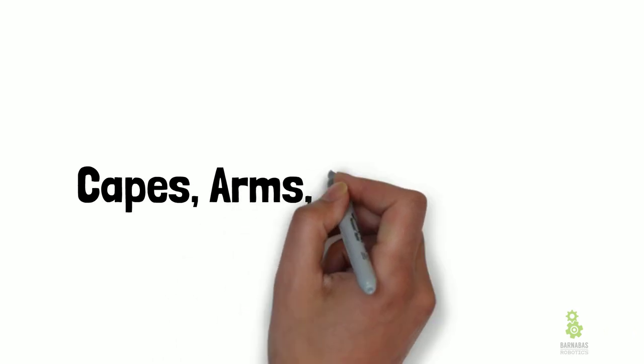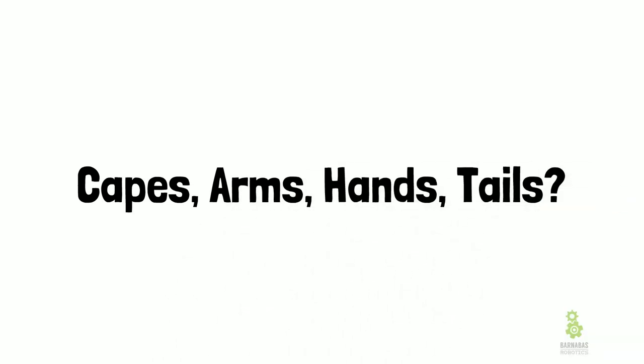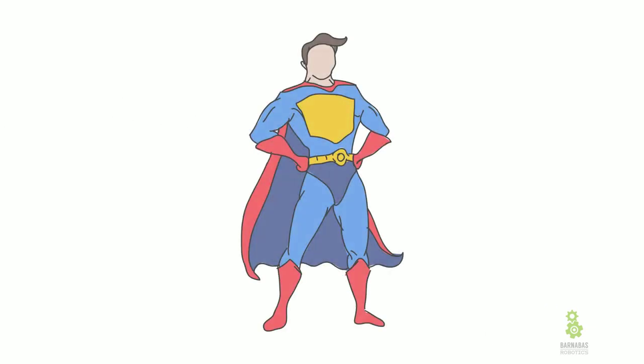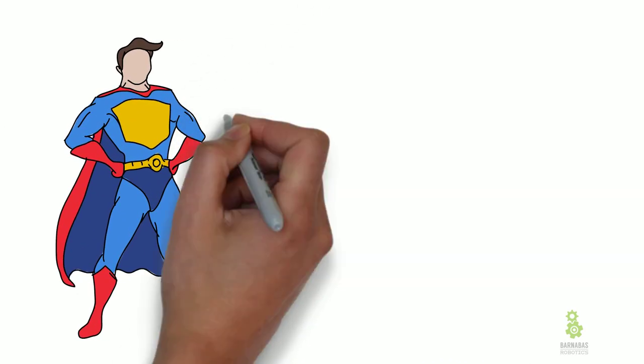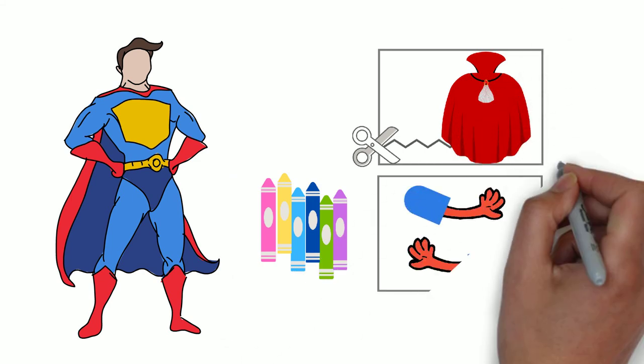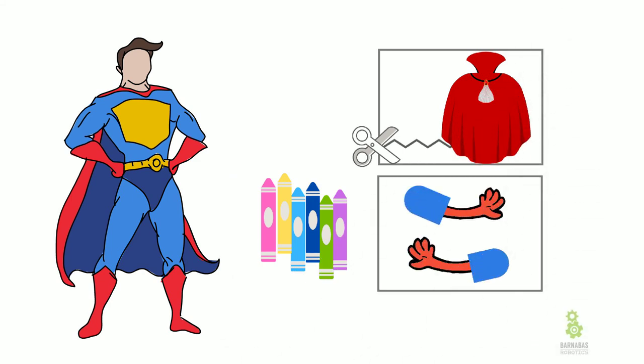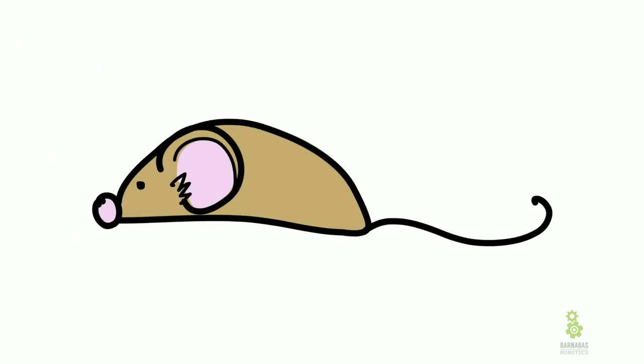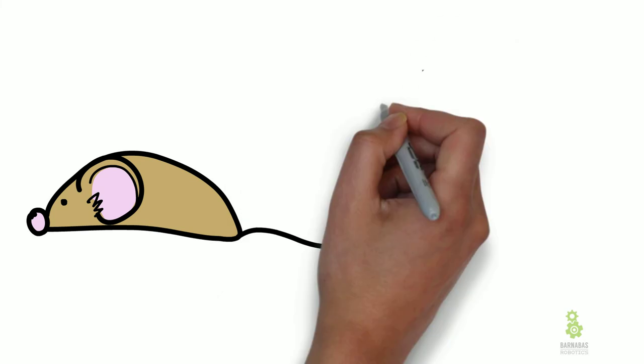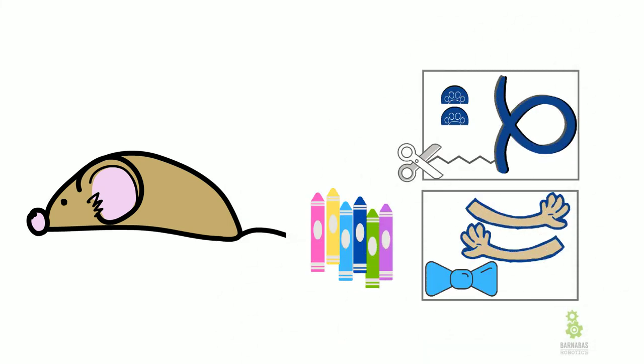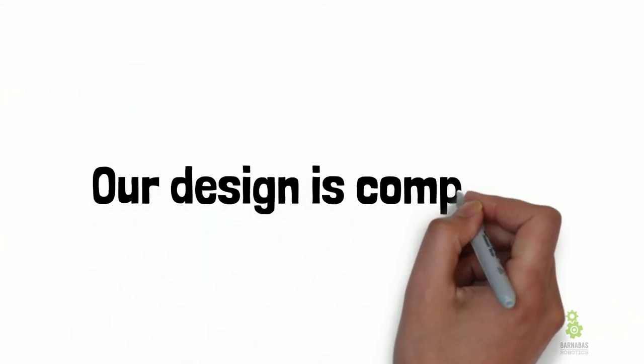Things are looking good. Now the last part — that's capes, arms, hands, and tails. These are appendages, extra things that we can add to our critter bot. So if it's the superhero, I'm thinking about maybe a cape, some gloves, some arms, and some sleeves. Now if I'm doing the mouse, let's see — tail, some arms, and a bow. Oh, my mouse is fancy! So I'm going with a bow there. Now that our design is complete, we need to go ahead and put this thing together.